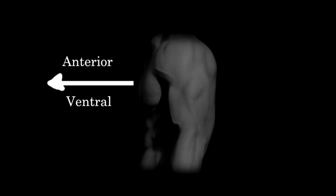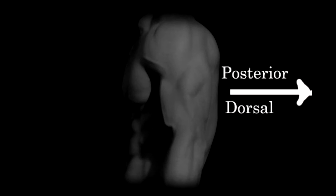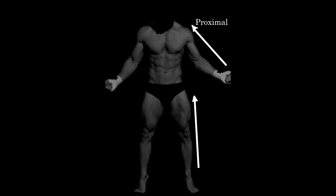Something that is anterior or ventral refers to structures that are more in front of others. Something that is posterior or dorsal refers to structures that are more towards the back. When you are talking about the limbs, proximal refers to heading towards the body, while moving distally along the limb means you are heading away from the body.